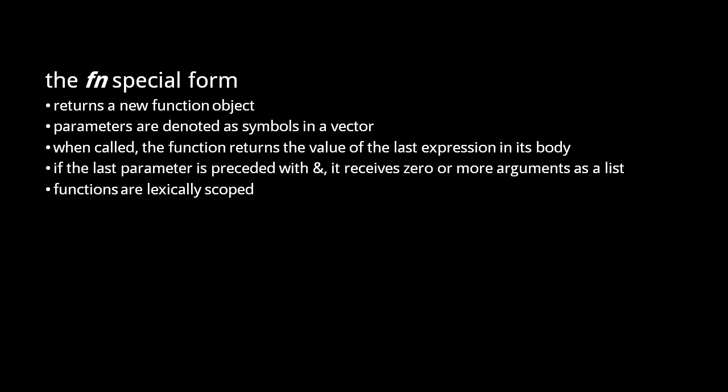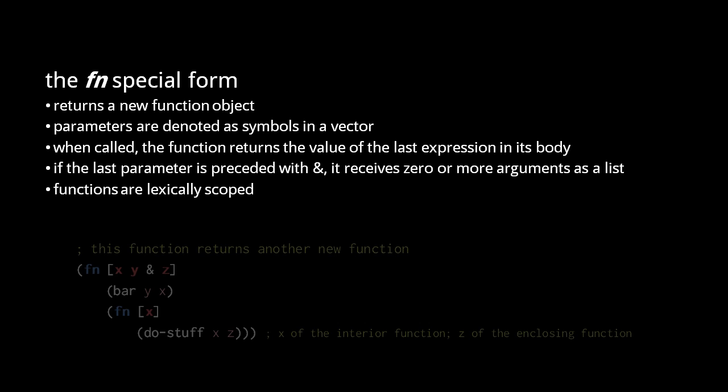Clojure is lexically scoped, so when functions are nested inside each other, the symbols are resolved inside-out. Here, the interior function has its own parameter called x, so x in the interior function resolves to that parameter, but z in the interior function resolves to the z parameter of the enclosing function.